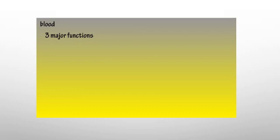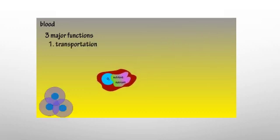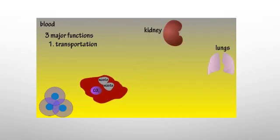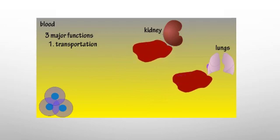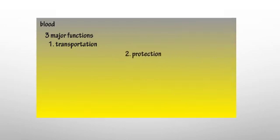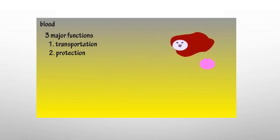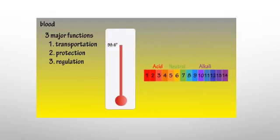Blood has three major functions in the body. Number one, transportation: blood transports oxygen and various nutrients to cells throughout the body, and carries waste products and carbon dioxide to the kidneys and lungs for removal. Number two, protection: blood carries white blood cells which fight infections that threaten to damage the body. Number three, regulation: blood regulates body temperature as well as pH balance.